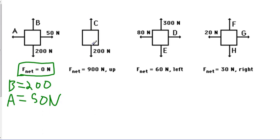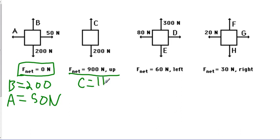For the next example, we have two vectors. The gravitational vector is 200 newtons again, but our net force is 900 newtons upward — like a string or rope pulling you up. If we have 900 newtons net going up, vector C must equal 1100 newtons, because 1100 going up minus 200 going down gives us a net of 900 newtons going up.